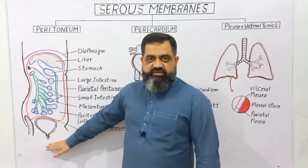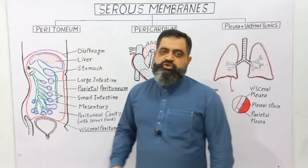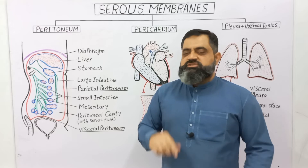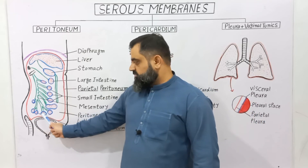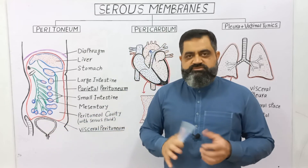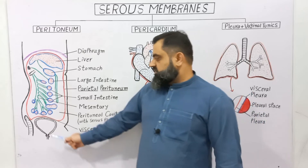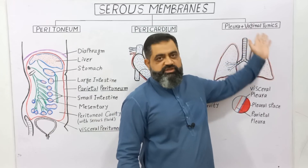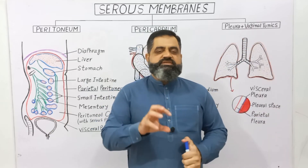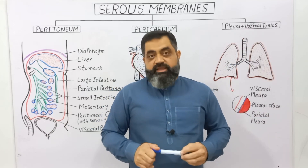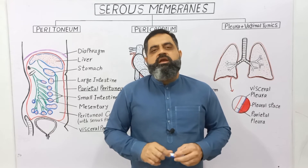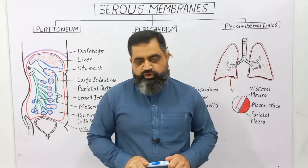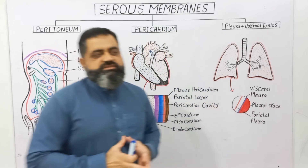Just below the abdominal cavity is the pelvic cavity. The pelvic cavity contains the urinary bladder, which also contracts to remove urine from the body and is surrounded by a serous membrane. There is also another serous membrane known as the vaginal tunic, which surrounds the testis and scrotum in the male, also a serous membrane present in the pelvic region of the body.